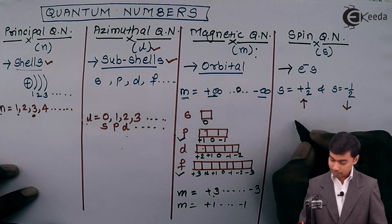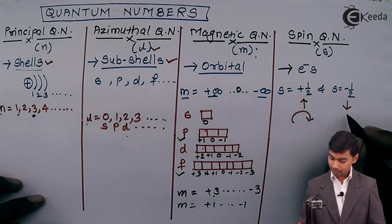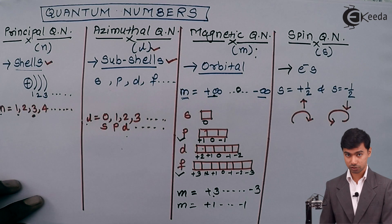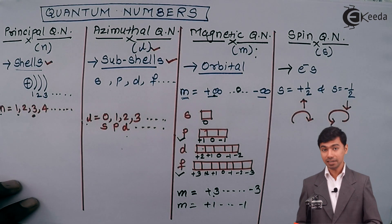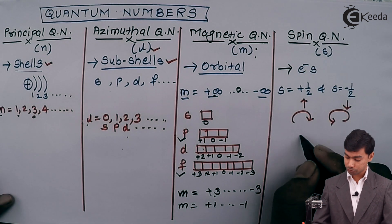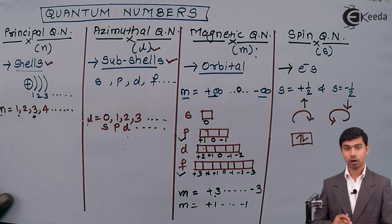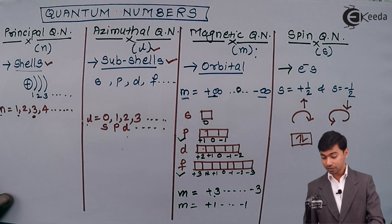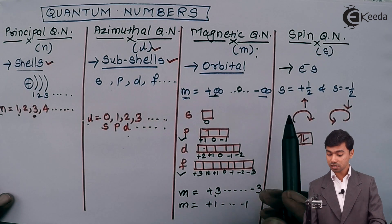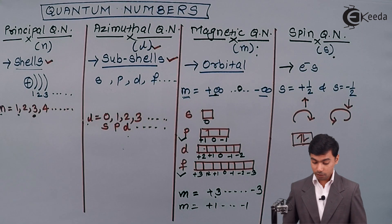When s equals plus half, the electron is ascending — meaning the electron is revolving around the nucleus in the clockwise direction. When s equals minus half, the electron is descending — meaning the electron is revolving in the anti-clockwise direction. When the plus and minus spin values merge, they form a pair of electrons. So using the spin quantum number, we can tell whether an electron is paired, and whether it is moving clockwise or anti-clockwise.